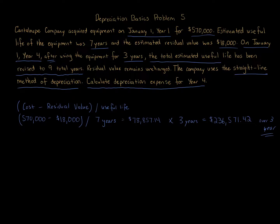Over those three years, we've depreciated $236,571.42 of the $570,000. Remember there's a residual value of $18,000, so we cannot go below that. Now we're changing the estimate at the beginning of Year 4, and the way I like to think about this is to draw it out visually — it helps you understand what's going on.